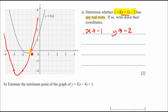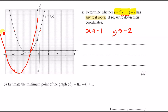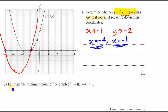Looking carefully at where the shifted curve crosses the x-axis, the two roots are at x = −4 and x = −1. So yes, there are two real roots, at the coordinates (−4, 0) and (−1, 0).